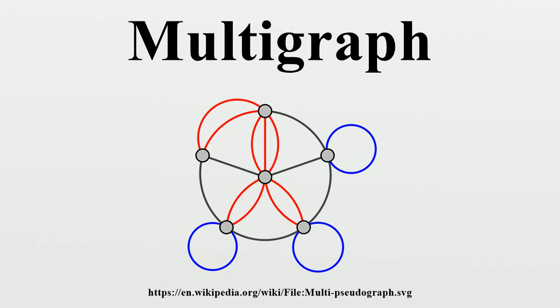Undirected multigraph: a multigraph G is an ordered pair G, equals with V, a set of vertices or nodes, and E, a multiset of unordered pairs of vertices, called edges or lines.